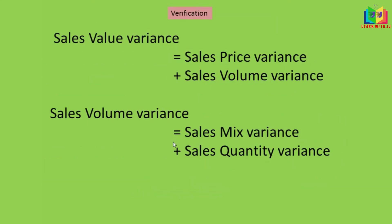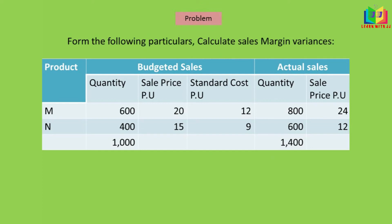For verification: sales margin variance equals sale price variance plus sales volume variance, and volume variance equals mix variance plus quantity variance. This is the same structure used for sales variance based on value — the only difference is that we consider profit here instead of the value of sale. Now we'll see one problem: from the given particulars, calculate sales margin variance.